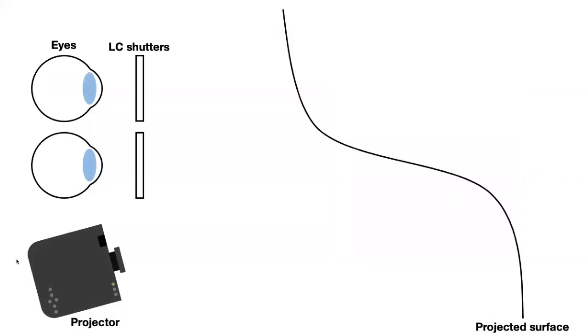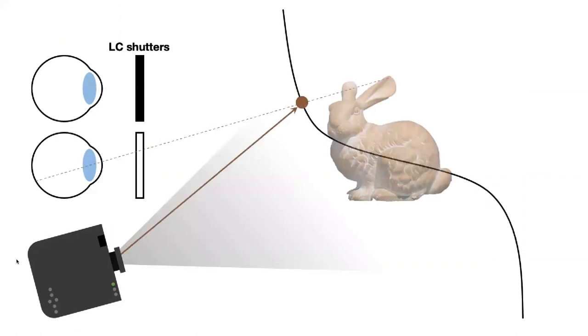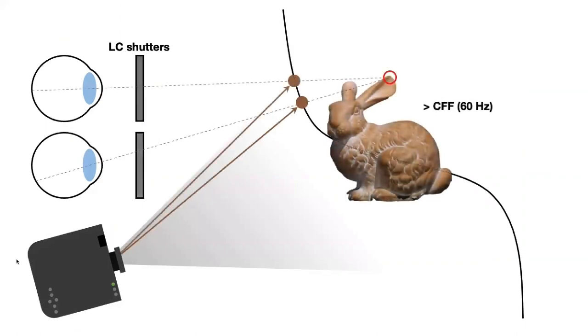Stereoscopic projection mapping is achieved by projecting two images with proper disparity for each eye in a time-sequential manner. The projected images are observed through active shutter glasses which prevent interference between the two images for both eyes and provide binocular cues.